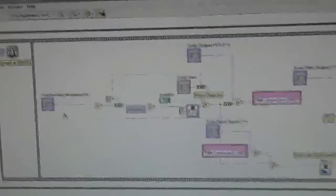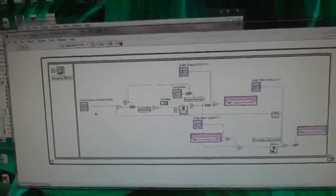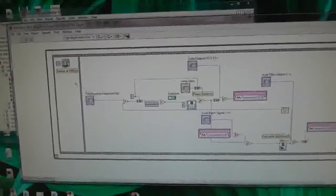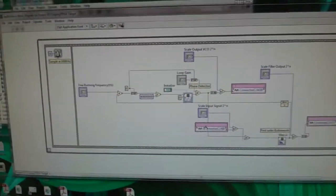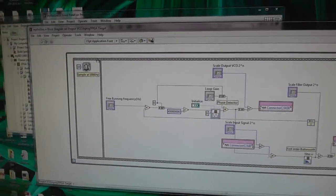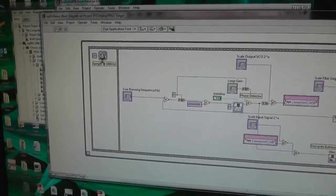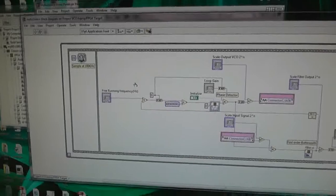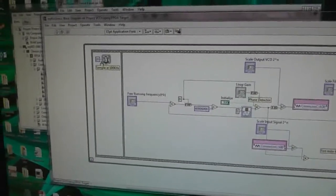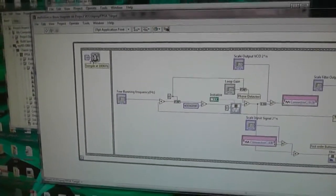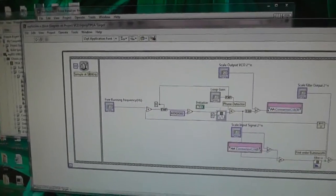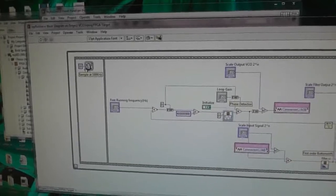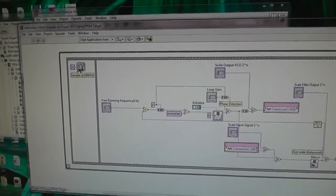This whole thing is in an infinite loop, a while loop. This thing here is the sequence, this thing that looks like a film strip around it is a sequence, which means it does this bit first, followed by that bit, and then goes back and does this again. This bit is just a delay of 100 kilohertz, you can work out what that is, 10 microseconds I think it is. So that creates the sampling rate for my application.